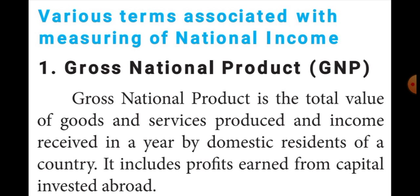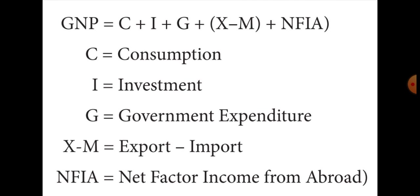GNP is equal to C plus I plus G plus XM plus NFIA. C means consumption, I means investment, G means government expenditure, XM means export and import. NFIA means net factor income from abroad — that means income from foreign countries.